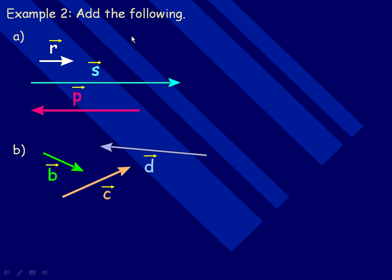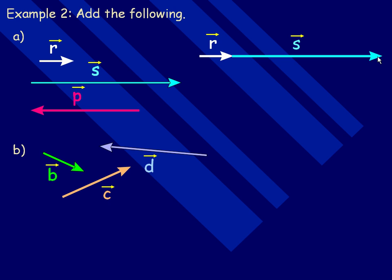In example two, we're going to add some vectors that are all parallel. I'll start with r, then add s by placing the tail of s right there and drawing the s vector. Now the tail of p is placed right there, and notice that the p vector comes back along the s vector. The sum vector of r plus s plus p goes from the tail of the first vector to the head of the last vector, so this green vector here is r plus s plus p.